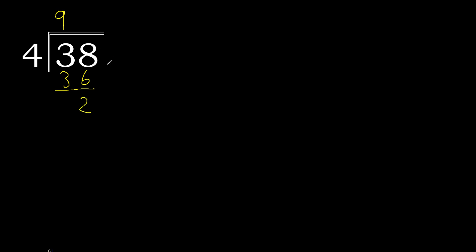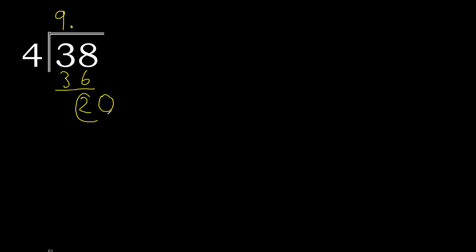Here there is no next digit, therefore complete — always complete with 0. So we have 20. 4 multiplied by 0... there is no number, complete with 0, complete with a decimal point. 20.